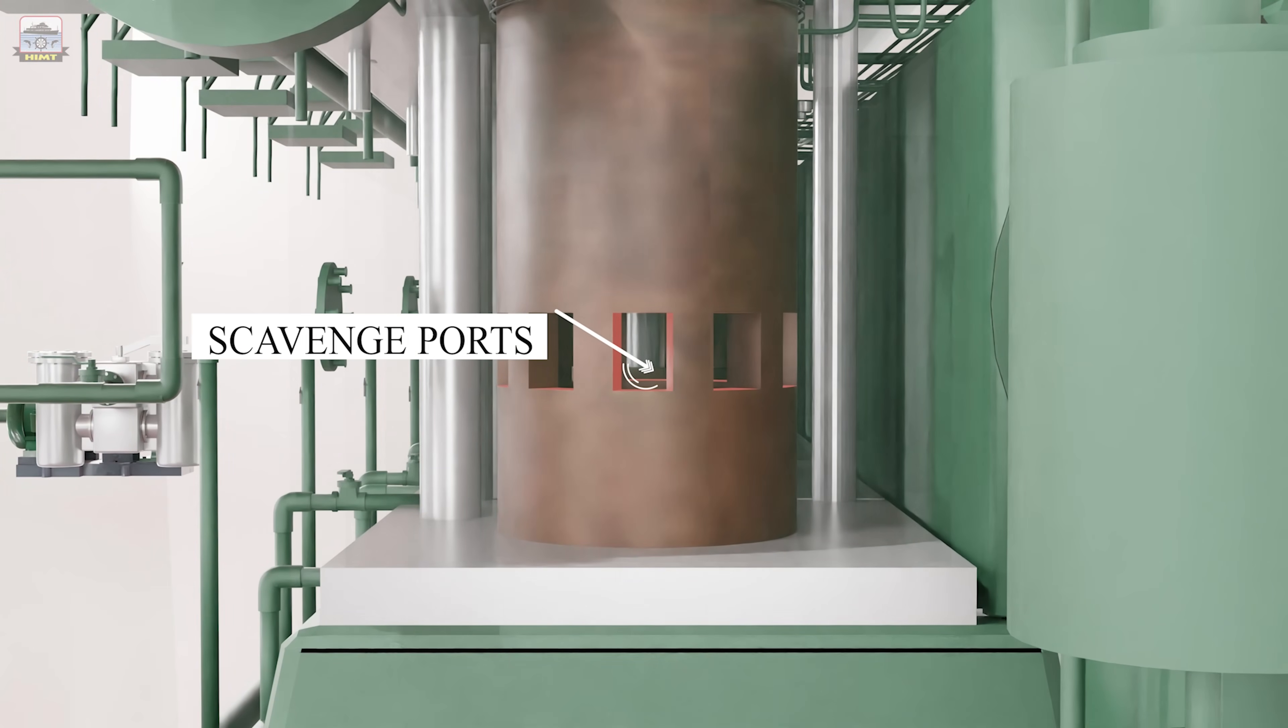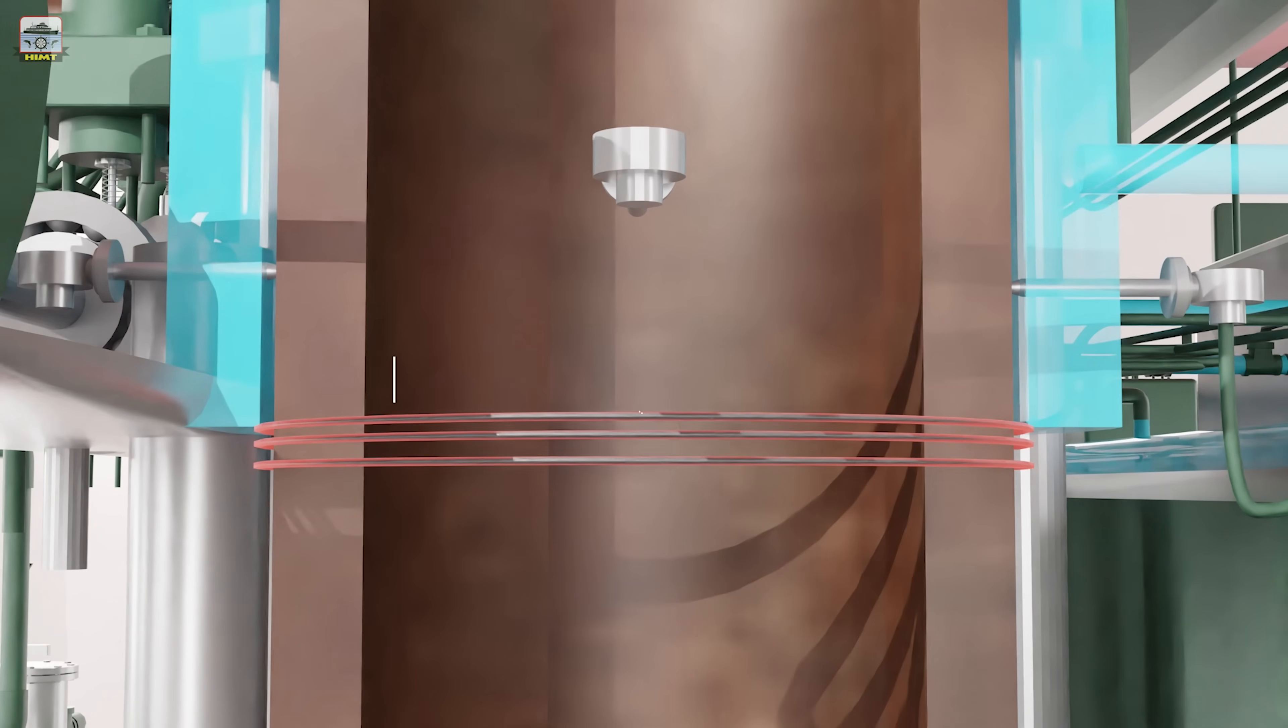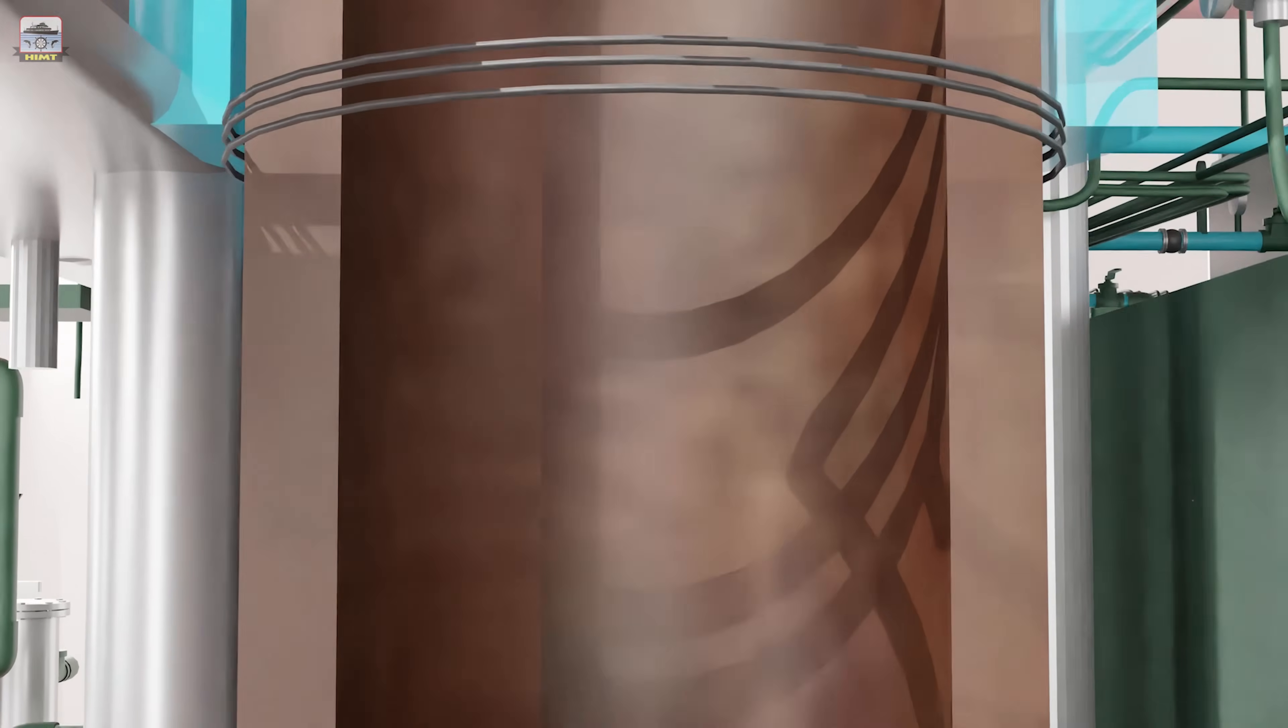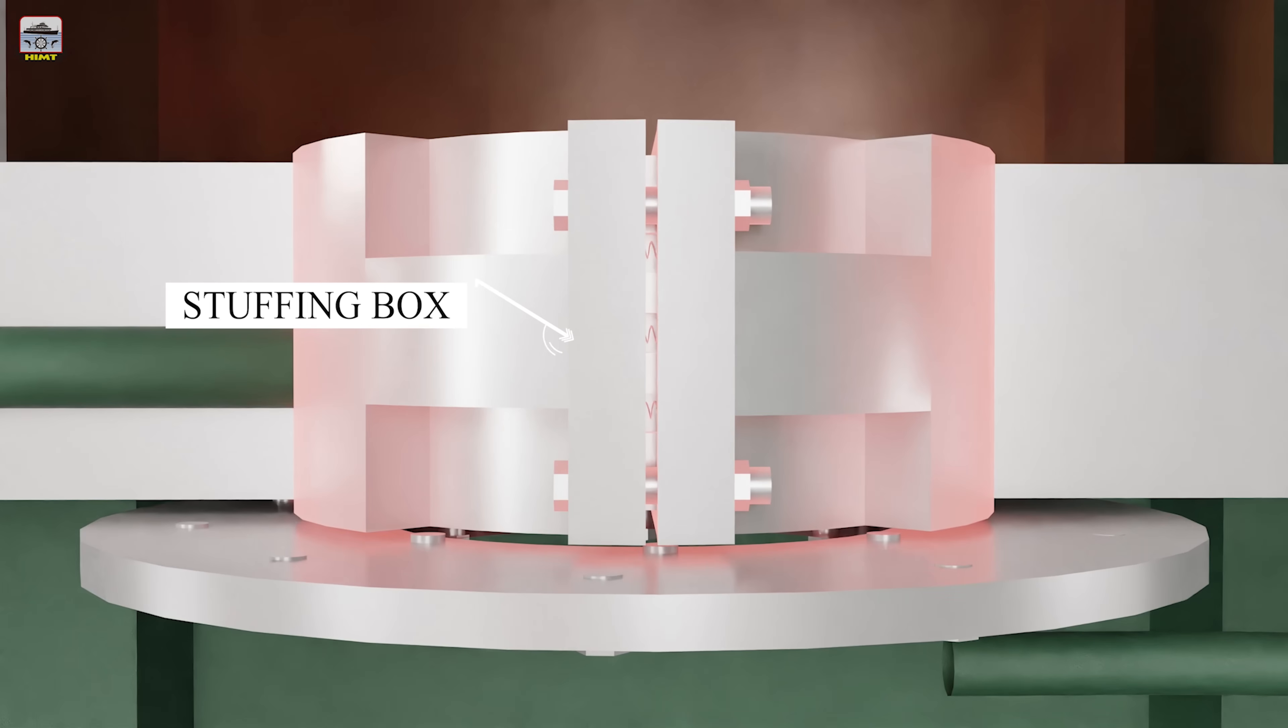Scavenge ports are provided at the lower parts of the liner for the air to enter into the combustion chamber from the scavenge manifold. O-rings are fitted surrounding the liner below the cooling water space to prevent water leaking into the scavenge space. The stuffing box is provided below the under piston scavenge space in the diaphragm separating the scavenge space from the crankcase.